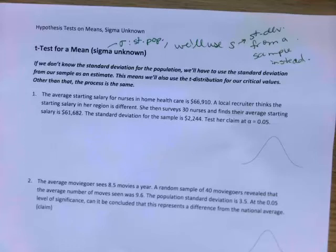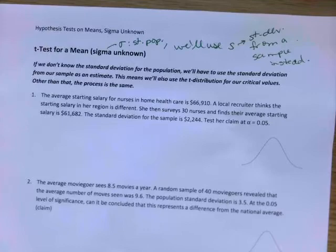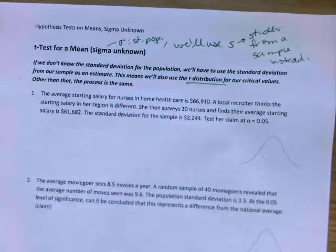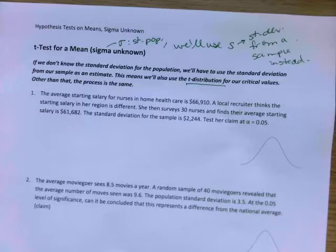Now the other change that you'll notice from when we did z-tests for means is that instead of using z-values for our critical values, we're going to use t-values for our critical values. So we're just going to use the t-distribution. Aside from that, everything else is going to be the same.